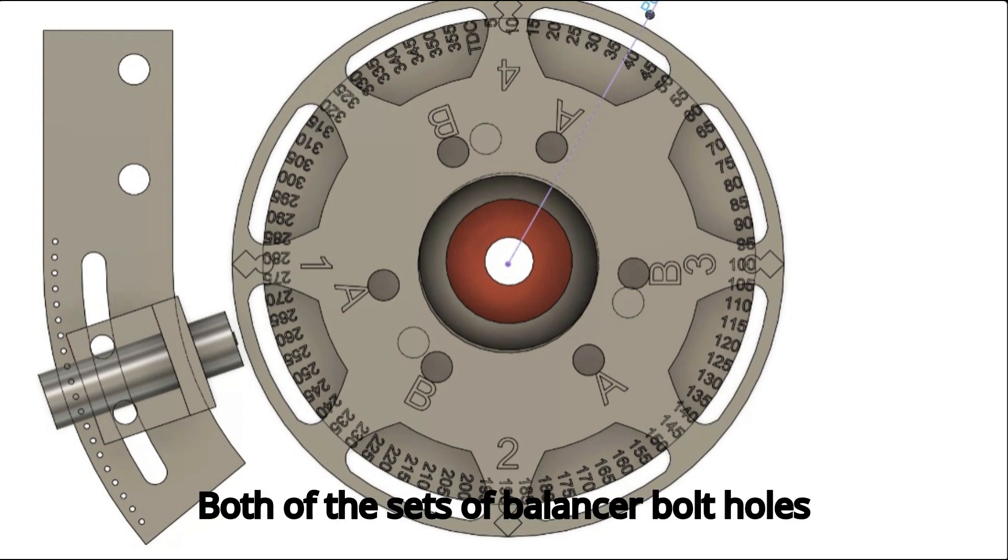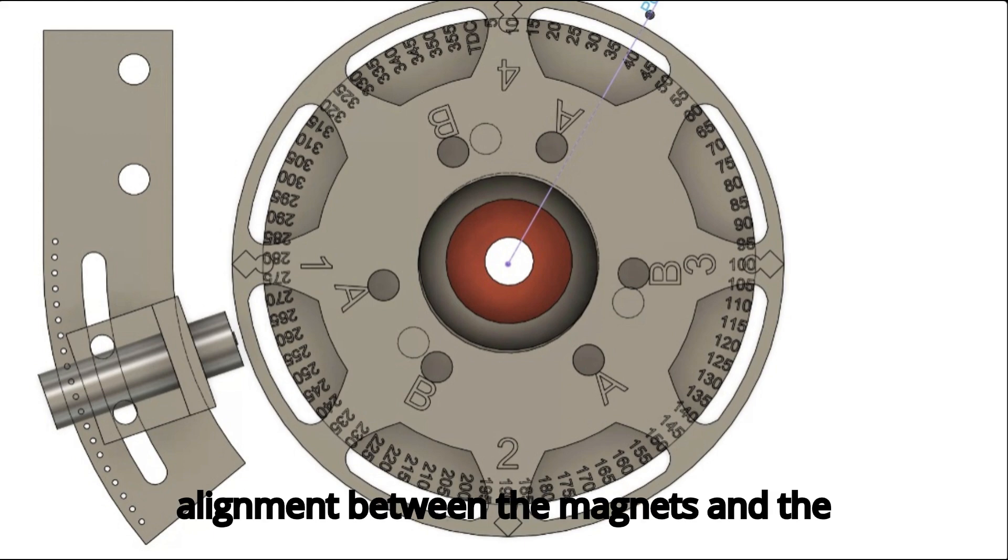Both of the sets of balancer bolt holes are the same bolt pattern, but slightly offset to allow for adjustability of the alignment between the magnets and the sensor.